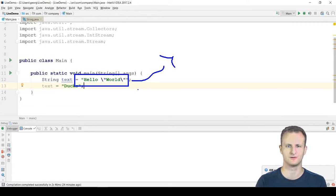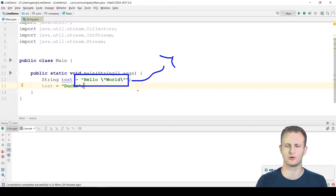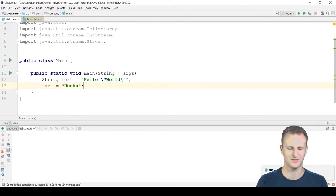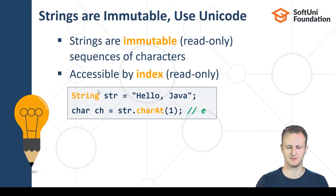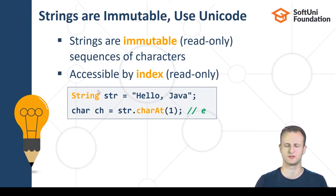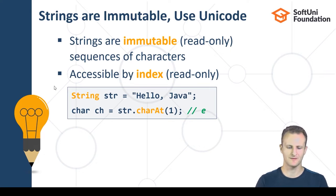Strings are immutable — they can't be mutated, their value can't be changed once created. You can change what a string variable points to — 'text' currently points to a string object, and you can say 'text = "ducks"'. What happens is you're not changing the contents of the original object; you're telling 'text' to point to a different string object. The old string gets discarded and eventually collected by Java's garbage collector.